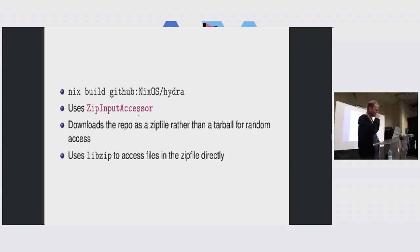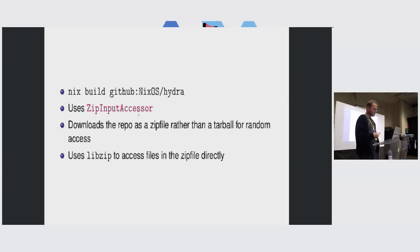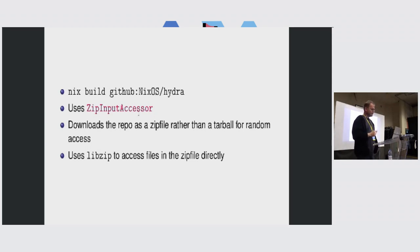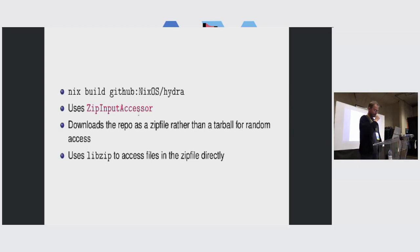Now, GitHub repositories: there's a big change here. GitHub flakes used to be implemented by downloading a tarball, unpacking it, and copying it to the Nix store. Now, it downloads the zip file, and it doesn't unpack it and certainly doesn't copy it to the Nix store. There is a zip input accessor that will directly extract files from the zip file. The reason for using a zip file instead of a tarball is that zip files are random access, and tarballs are not. This saves a lot of disk space and CPU time.